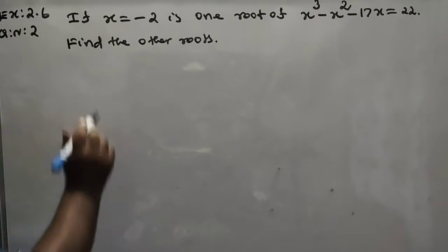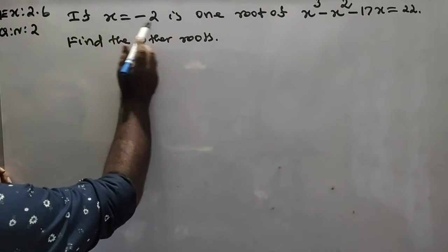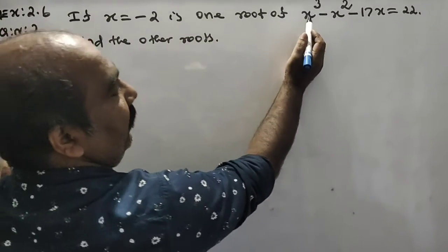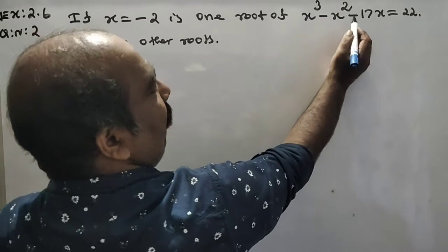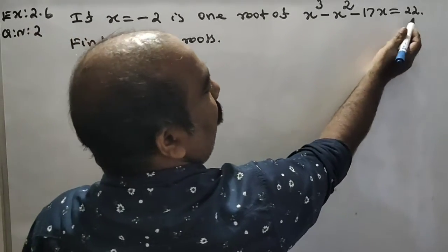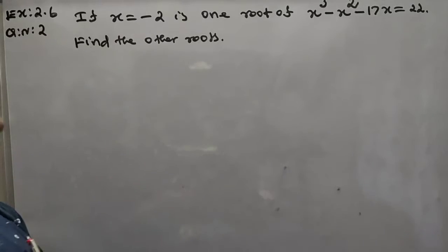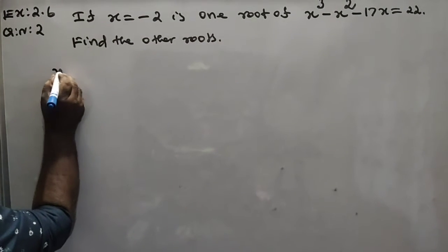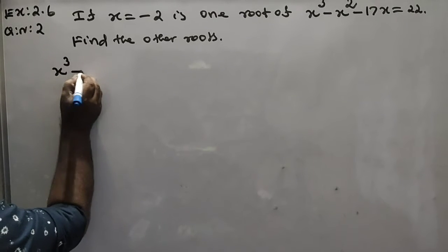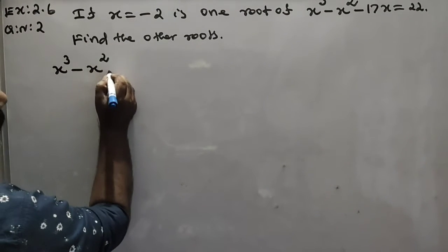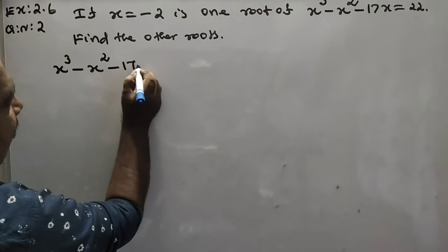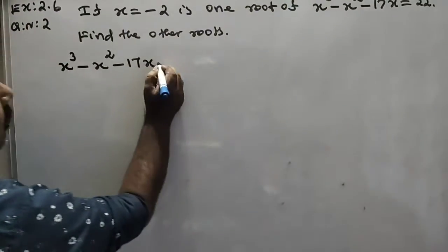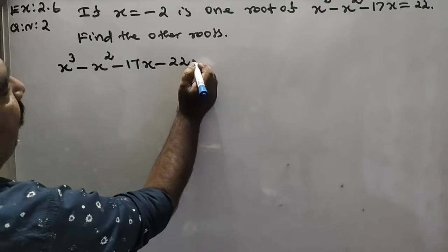If x is equal to minus 2, find the other roots of the equation x cube minus x square minus 17x plus 22 is equal to 0.